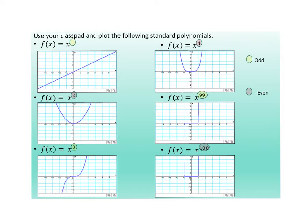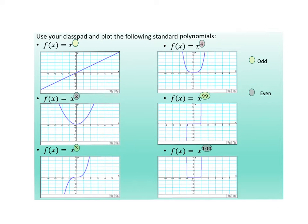I've highlighted things like odd and even. What do you observe in the graph with odd and even? What is the big difference between odd and even? For the odd one, as x approaches positive infinity, y approaches positive infinity. As x approaches negative infinity, y approaches negative infinity. That's for the odd one.